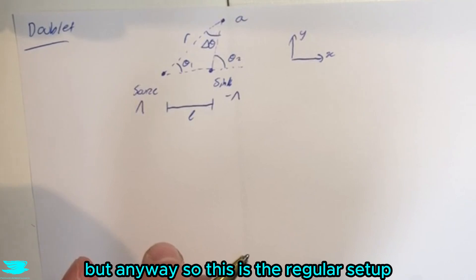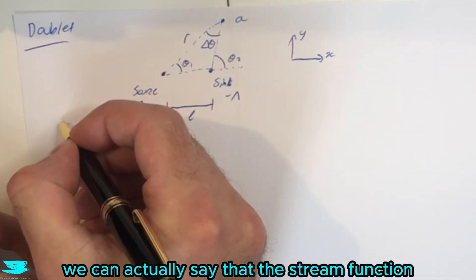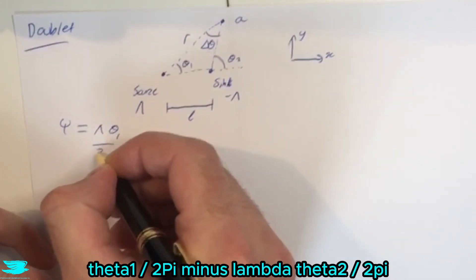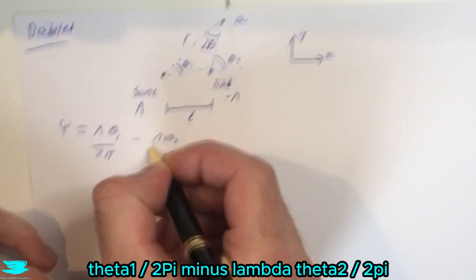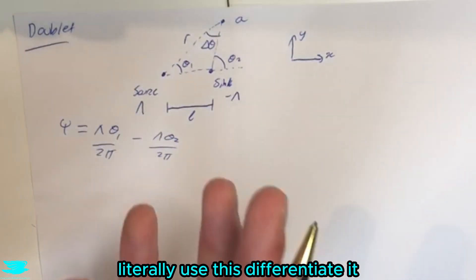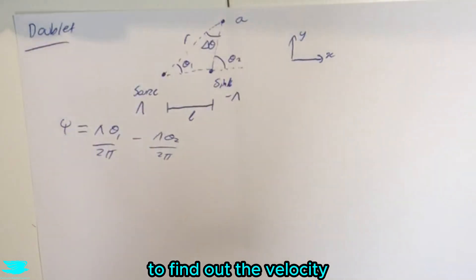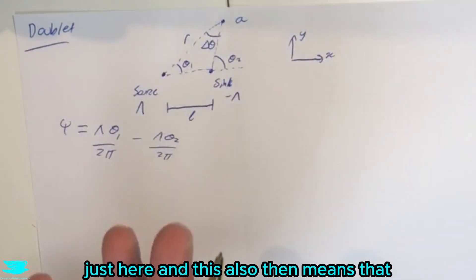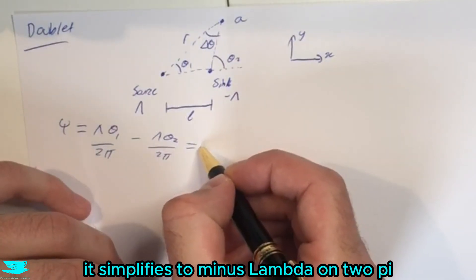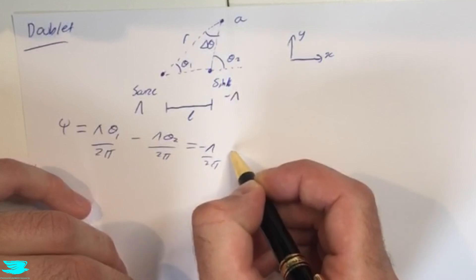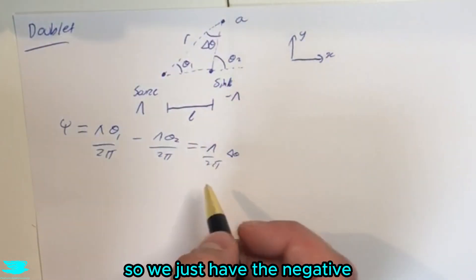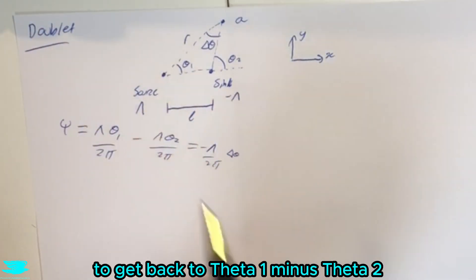We're going to be going through radial first and then Cartesian afterwards. But anyway, so this is the regular setup. So straight up we can actually say that the stream function psi equals lambda theta1 divided by 2 pi minus lambda theta2 divided by 2 pi. So this is actually already very powerful because we can just literally use this to differentiate to find out the velocity in the two different directions quite easily just here. And this also then means that it simplifies to minus lambda on 2 pi delta theta because delta theta is theta2 minus theta1.